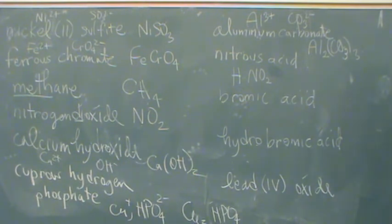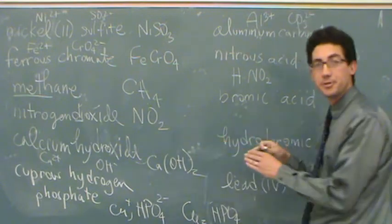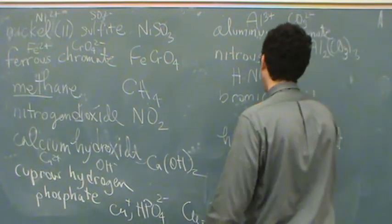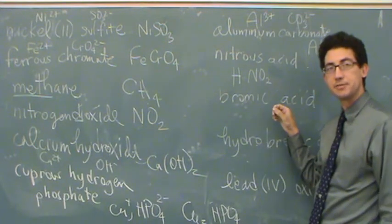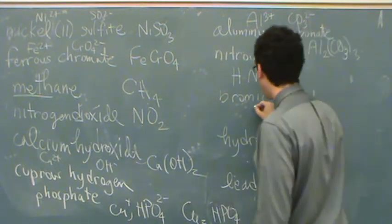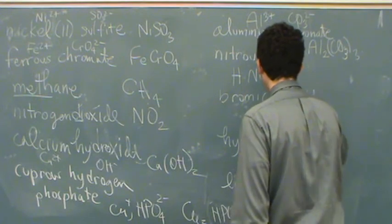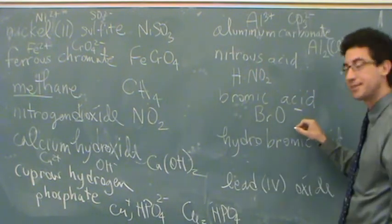Bromic acid. This is one of those halogen ones. We don't see the hydro, so we know it's polyatomic. So bromic, is that higher or lower oxygens? More or less oxygens? More, how many? Three. I know it's -1.